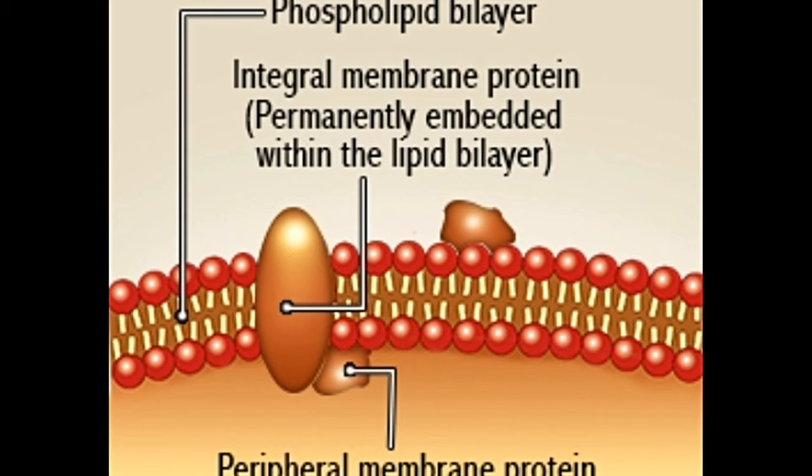The freeze fracture technique involved freezing the membrane quickly in liquid nitrogen to about minus 196 degrees Celsius, followed by fracturing it with a cold microtome knife. Thereafter, the double lipid layer split into two monolayers, and the layers were examined under an electron microscope.